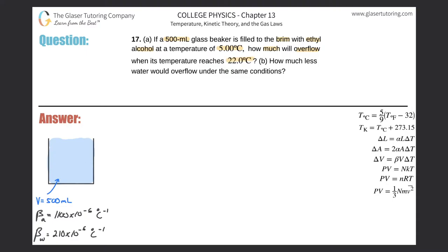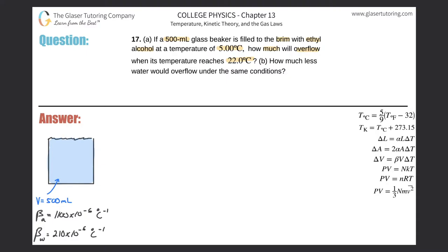Here's a picture: we have a volume of ethyl alcohol at 500 milliliters, and the coefficient of volume expansion β_a (the 'a' is for alcohol) is a known value. Whenever a fluid changes temperature, its volume will also change. We need to figure out how much of this volume will overflow. Since it's filled all the way to the brim, whatever volume it expands by will directly overflow.